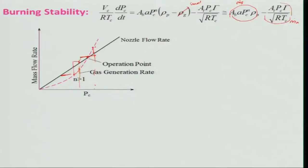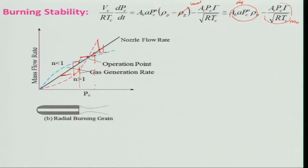Now let us look at the situation where n is less than 1. If n < 1, the mass generation curve is a concave (dashed blue) curve. If it is operating at the stable point and due to some disturbance the pressure decreases, then the mass being generated is higher than the mass going through the nozzle — so mass accumulates and pressure increases, bringing the operating point back to the original stable point.